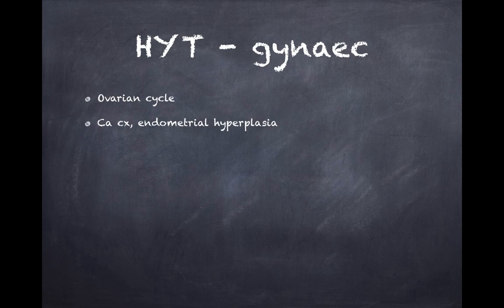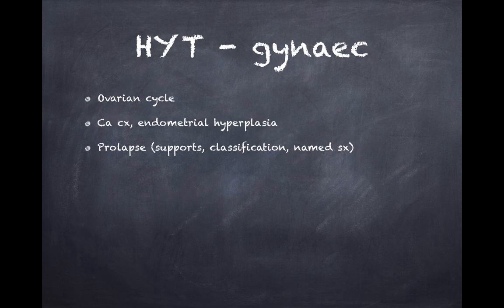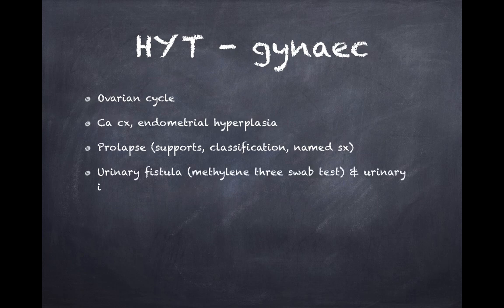For uterine prolapse, knowing the supports of the uterus is extremely important. Know the classification and the named surgeries — depending on the patient's age, different surgeries are performed. Make a table with the surgery name matched to the actual procedure. For urinary fistula, understand the logic behind the methylene blue three-swab test.